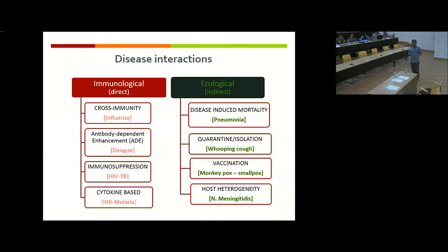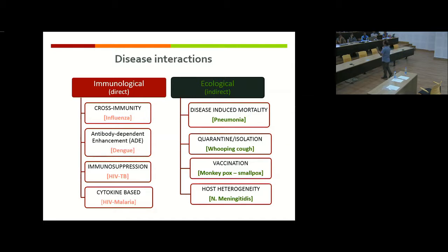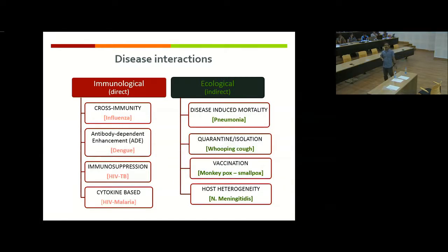Interactions can also occur through regulation of host immune components — for example immune suppression and cytokine-based mechanisms, as seen in HIV–TB and HIV–malaria. Ecological interactions include disease-induced mortality or isolation: when an individual develops severe disease, they are taken out of the chain of circulation, interfering with the other pathogen. Vaccination similarly removes individuals. Host heterogeneity and different immune profiles can also induce ecological interactions.